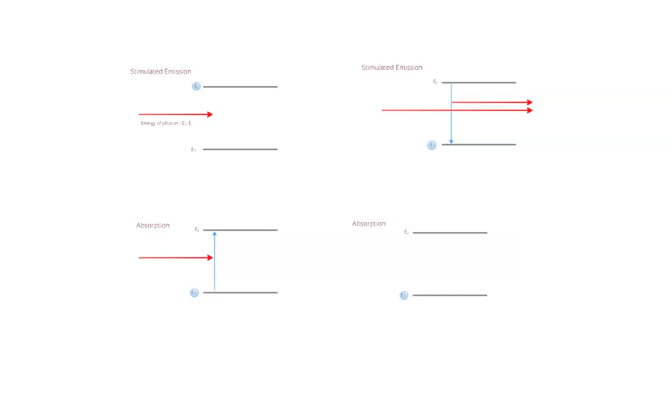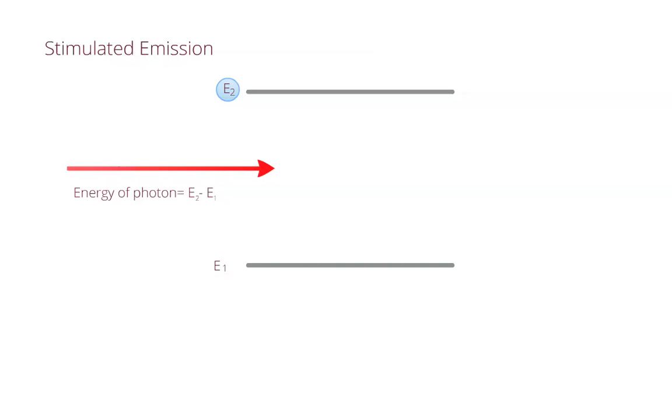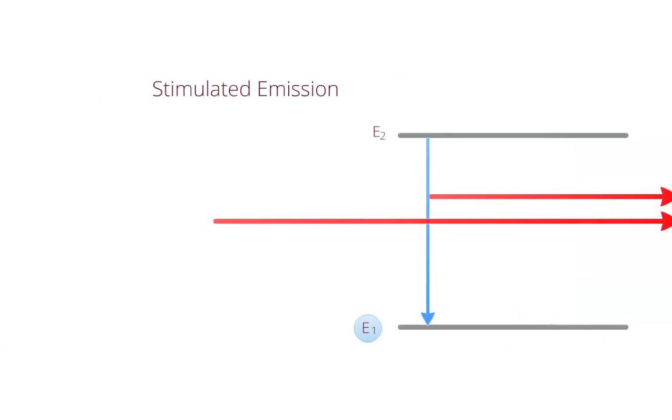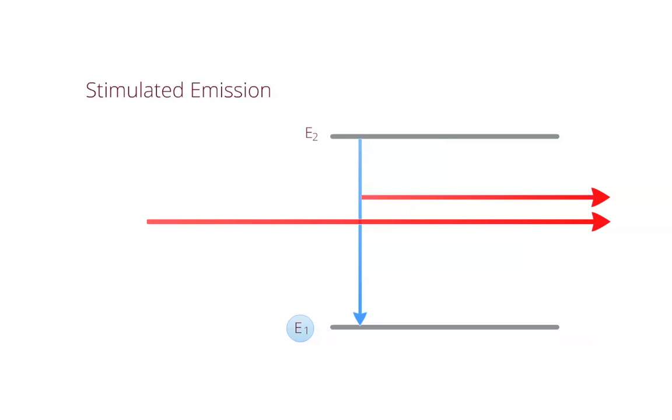This is why stimulated emission is useful. In the case of stimulated emission, if the atom is in the excited state as before and a photon interacts with it, then another photon is created at the same frequency as the incoming photon and travels in phase in the same direction. So if the energy of the incoming photon is the same as the energy gap between the two levels, then two photons will result and the beam will be amplified as we wanted to achieve lasing.